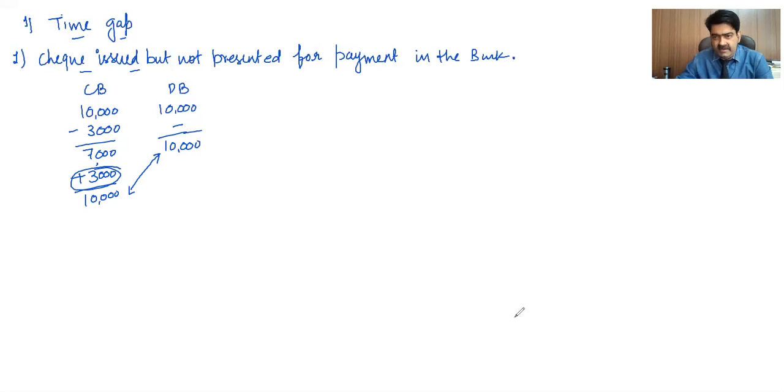Now see, next point. That is point number two, checks paid into bank for collection, but not collected or credited by the bank.